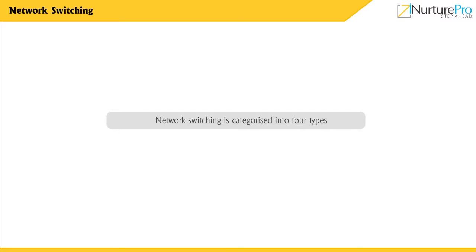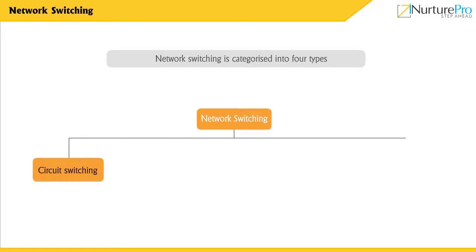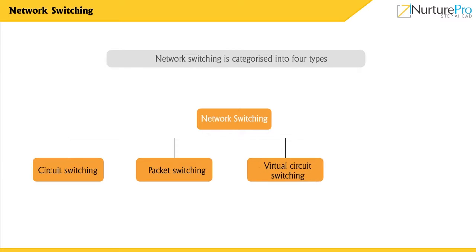Generally, network switching is categorized into four types: circuit switching, packet switching, virtual circuit switching, and message switching. Let's learn about each type of network switching.